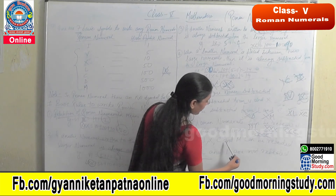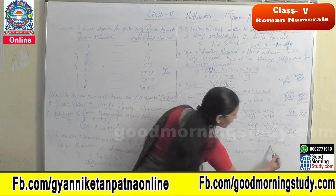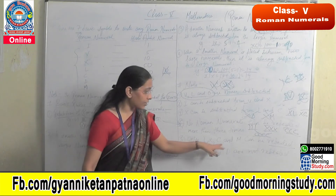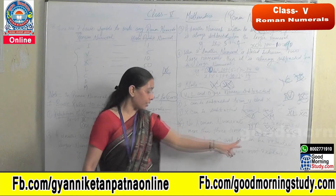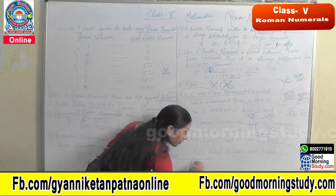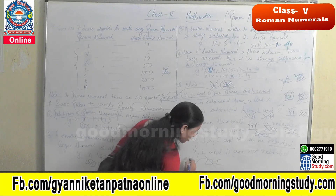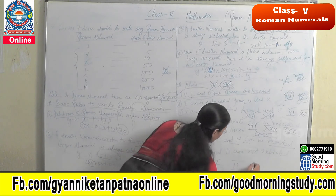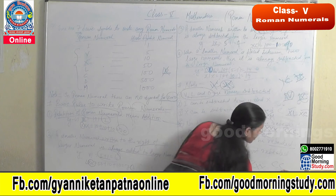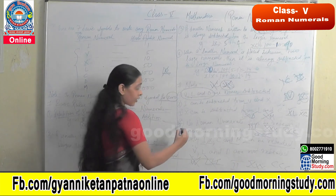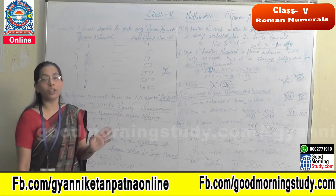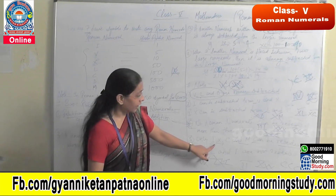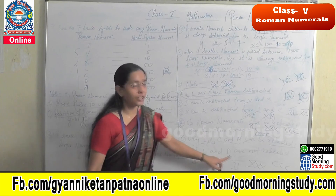Fifth caution: only I, X, C, and M can be repeated. V, L, and D are never repeated. So we can write II, XXX, and CCC, but we cannot write VV or LL or DD — those are wrong. Remember: I, X, C, and M can be repeated up to 3 times, but V, L, and D cannot be repeated at all.